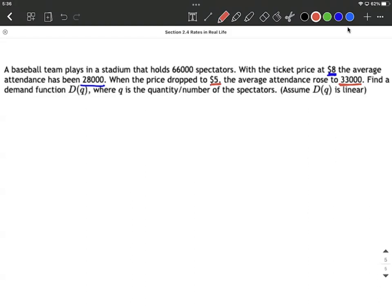So our goal here is to create a demand function, D of Q. Q is going to be quantity, number of spectators, and P is going to be the price.